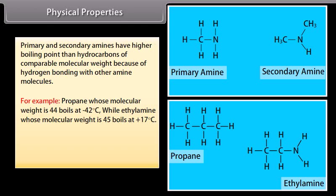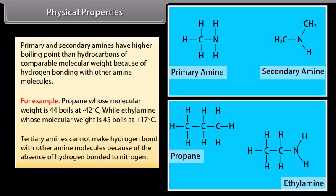For example, propane (molecular weight 44) boils at −42°C, while ethylamine (molecular weight 45) boils at +17°C. Tertiary amines cannot form hydrogen bonds with other amine molecules because there is no hydrogen bonded to nitrogen.